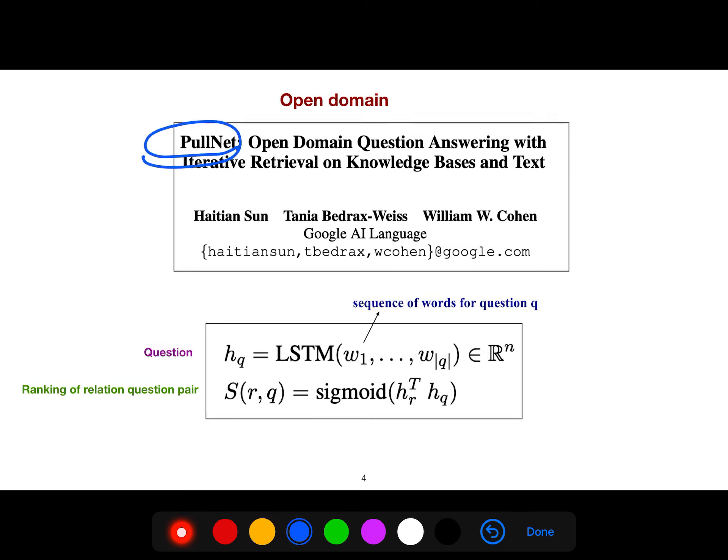Pull net is a very great article for open domain, and I think I will explain it in another lecture. But the idea is very simple: we rank a relation question pair. You have embedded your question with any kind of sequence-to-sequence model such as LSTM. Now you have your question and relation, and you find if this question and relation have highest score.